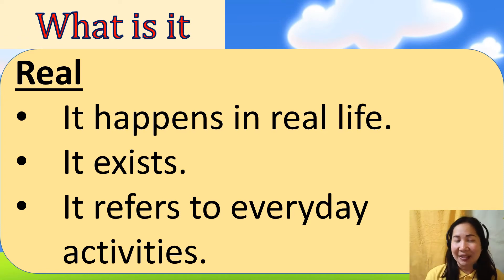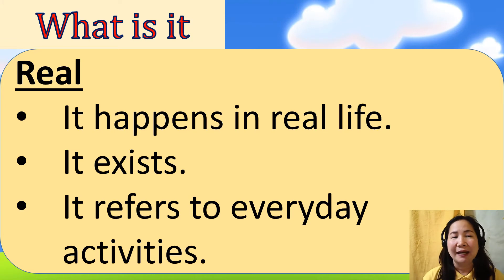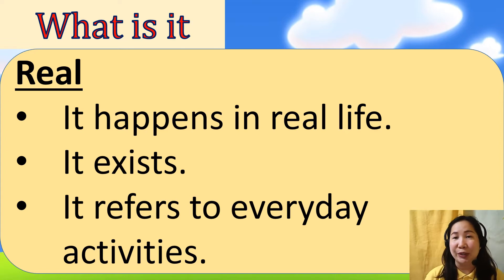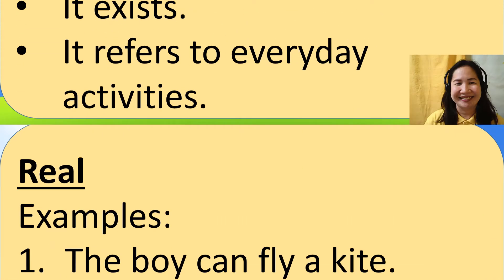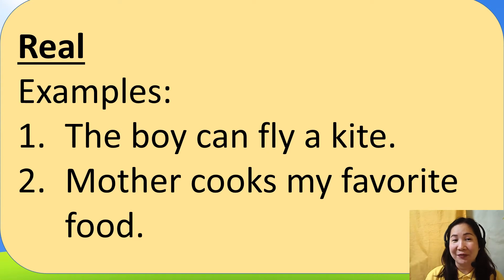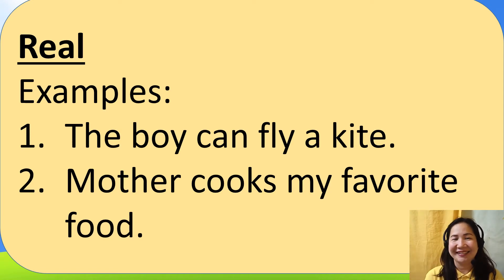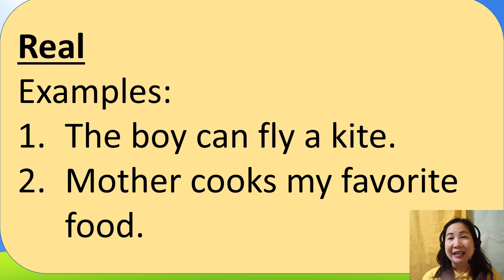When do we say that an image is real? It exists, it refers to everyday activities — anything and everything that we can see and experience, and we know is true, that is real. For example, I want you to look around your house, your room, and try to see what images are real. Here are my own examples: the boy can fly a kite — that is real. Mother cooks my favorite food — that is another real image or sentence.